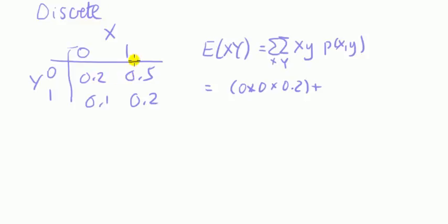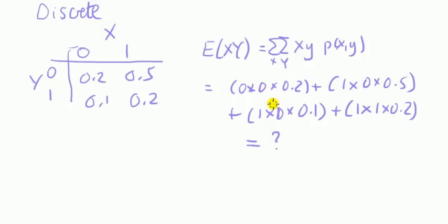So the next one, we could do this one. So that would be x is 1 times y is 0 times the probability of that happening, the joint probability of that happening is 0.5. Okay, so we have four terms there and that's the way to do that kind of question.